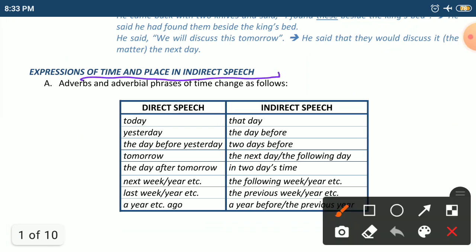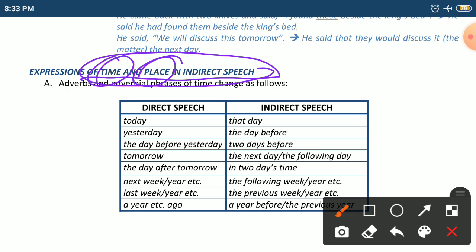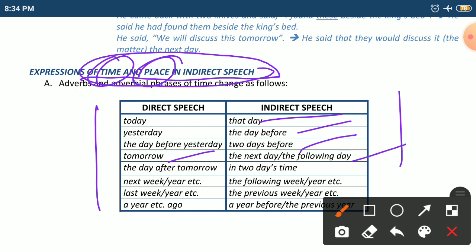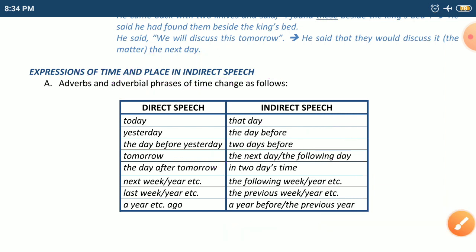Expressions of time and place change in indirect speech. Here are the key changes: 'today' becomes 'that day', 'yesterday' becomes 'the day before', 'the day before yesterday' becomes 'two days before', 'tomorrow' becomes 'the next day' or 'the following day', 'the day after tomorrow' becomes 'in two days' time', and 'next week/year' becomes 'the following week/year'.